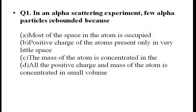Now let's start chemistry. First question: In an alpha scattering experiment, a few alpha particles rebound. A beam of alpha particles is directed at gold foil. A few alpha particles are deflected and some rebound. Looking at the atomic structure, the answer is that the nucleus carries a positive charge — a dense, positively charged nucleus in the center of the atom causes the rebound.